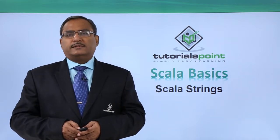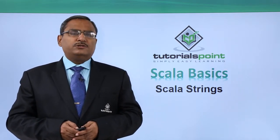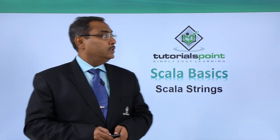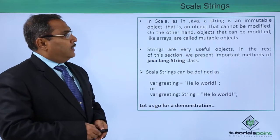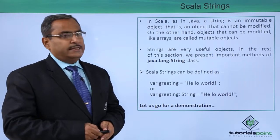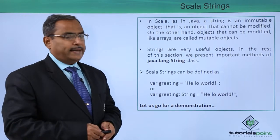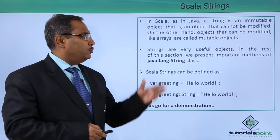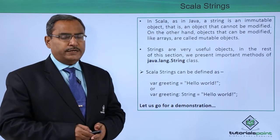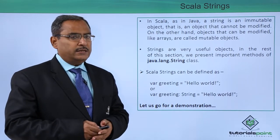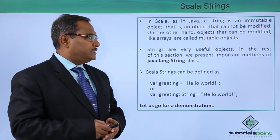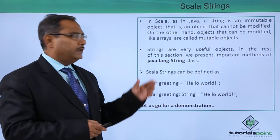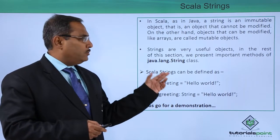In this video, we are going to discuss Scala strings. We know that strings can contain alphanumeric characters and also some special characters. In Scala, as in Java, a string is an immutable object — that is, an object that cannot be modified. Objects which can be modified are known as mutable objects; arrays are an example. Strings are very useful objects, and we will present important methods of the Java.lang.String class.